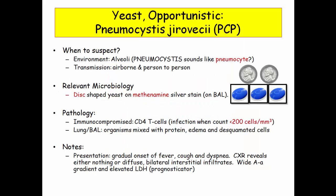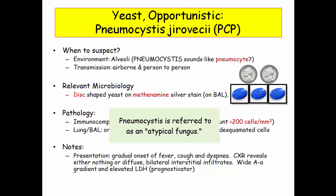The next opportunistic fungus is pneumocystis, still referred to as PCP by old timers who first learned about it when it was classified as a protozoa. Even though it has been reclassified, it is still referred to as an atypical fungus in some questions. If a question talks about an atypical fungus, they are referring to pneumocystis.